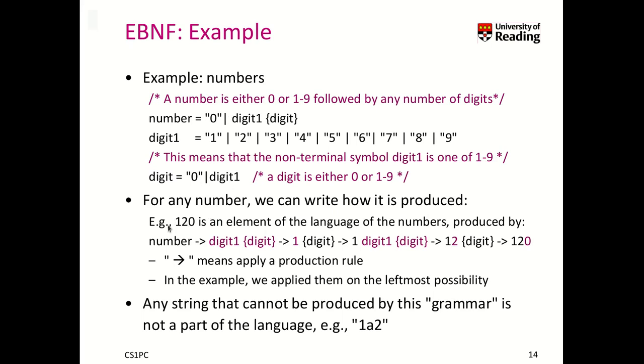So for any number that we have, we can now write down how it is produced. We can write the production rules. For example, the number 120 is an element of our language defined by those three rules that is produced as follows. First, you go from a number to the right rule, digit one, or, and any number of digit repetitions. Then we take digit one and replace it with one, because it's the number we want to figure out is 120.